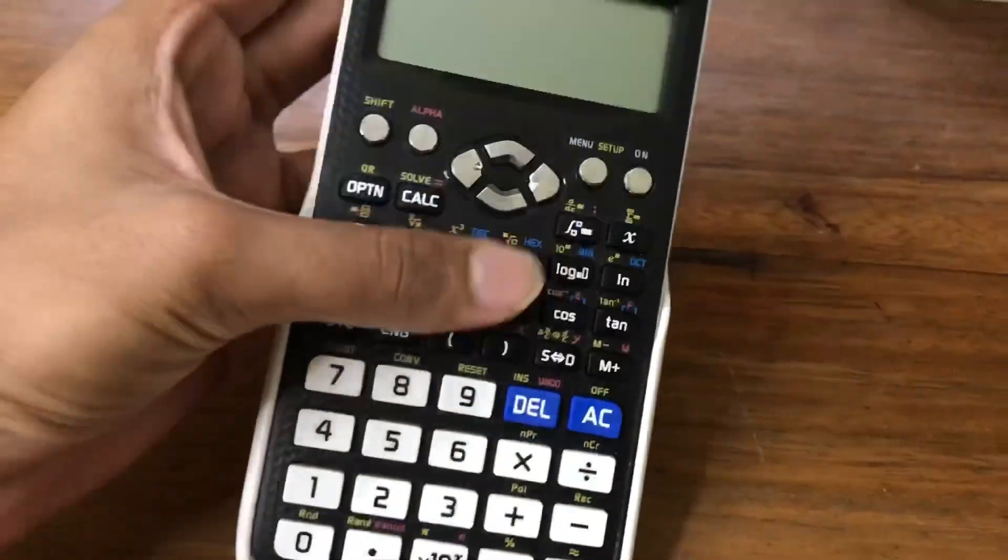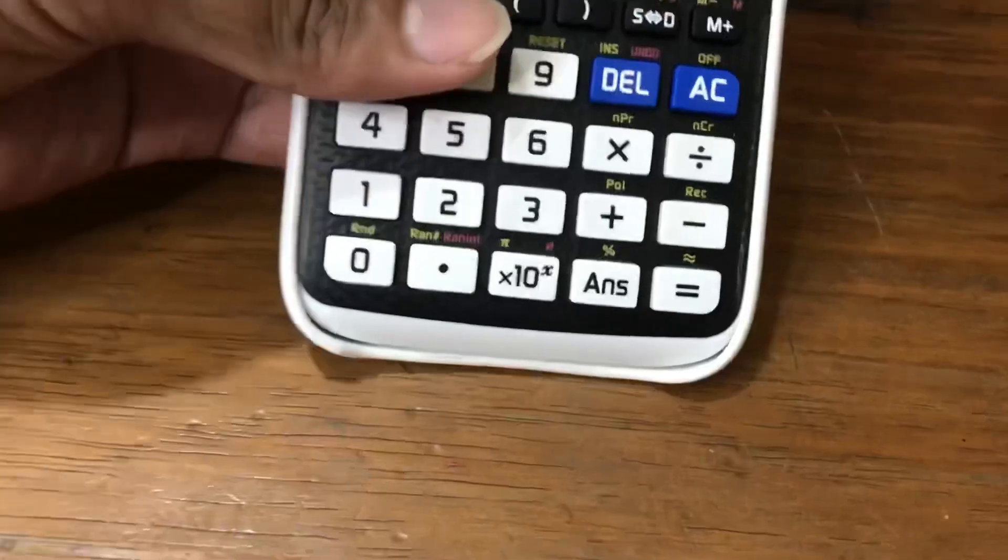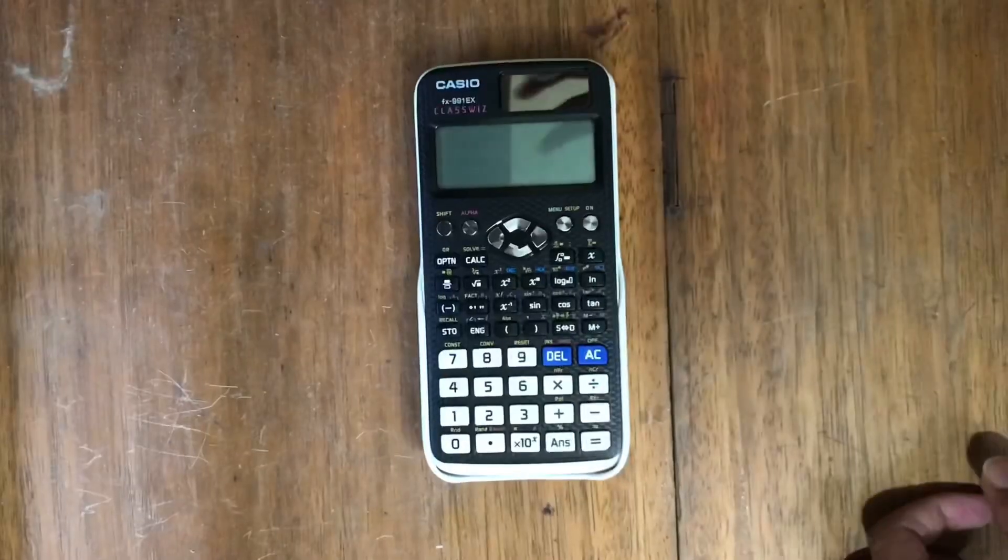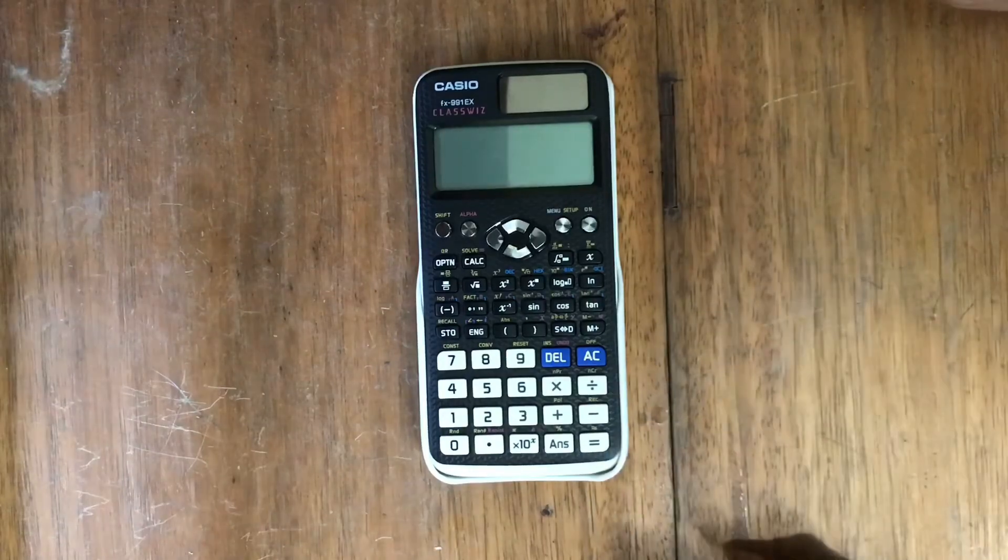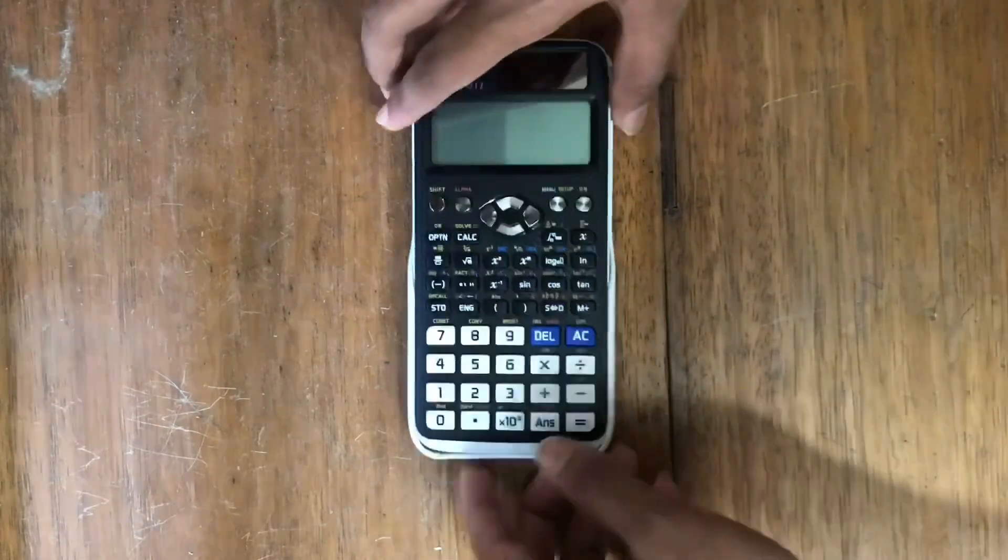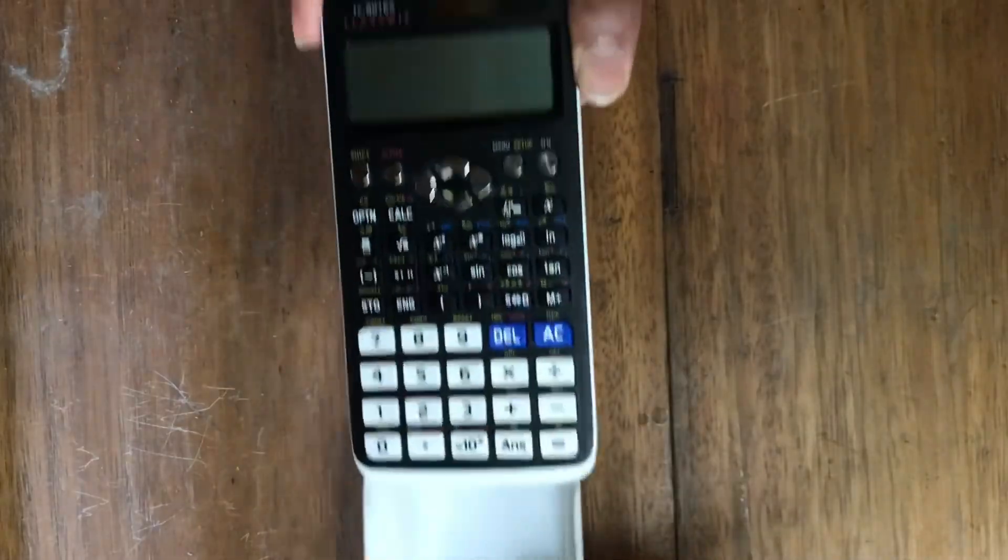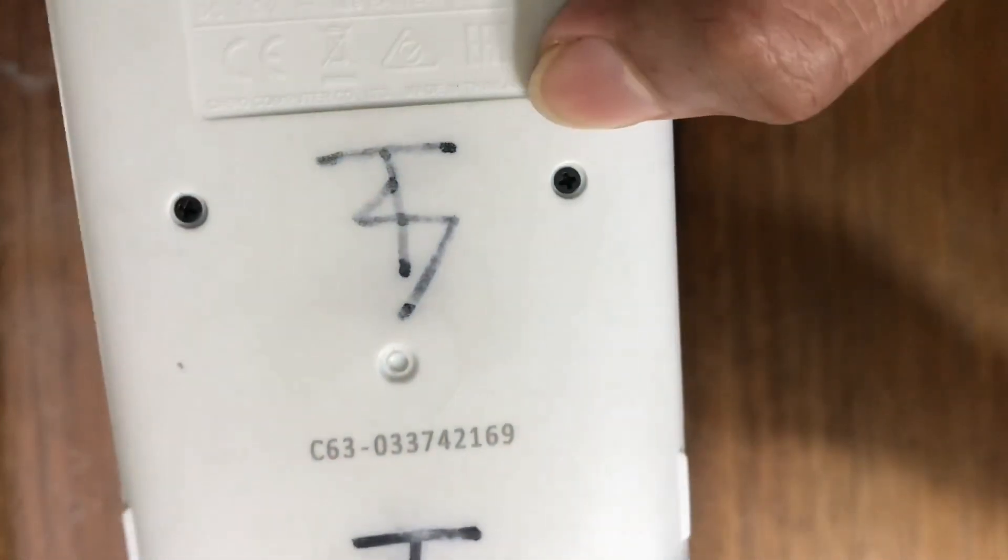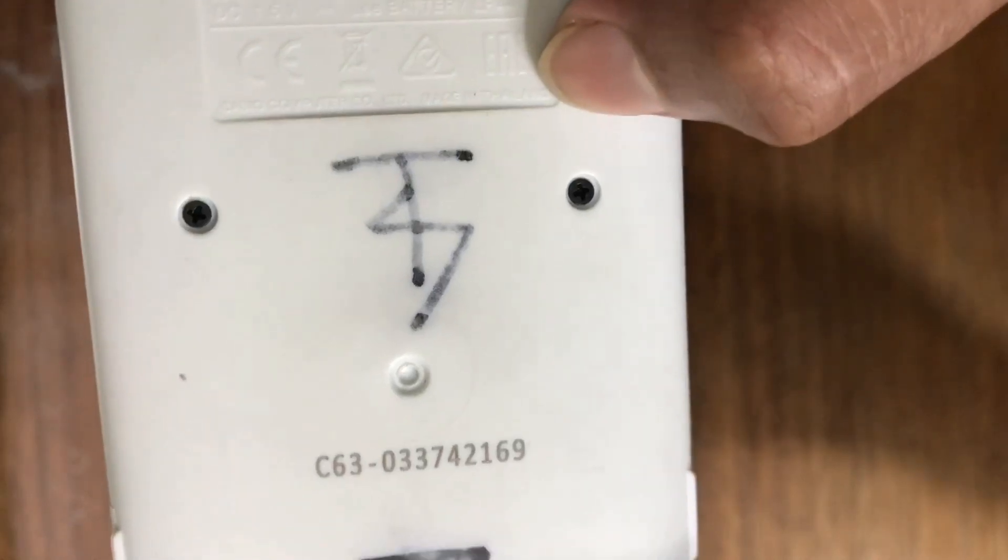It should be from Thailand. If we go to the backside of the calculator, we will see it's written 'Made in Thailand.' The fake one will be from other countries, but the real one is made in Thailand.